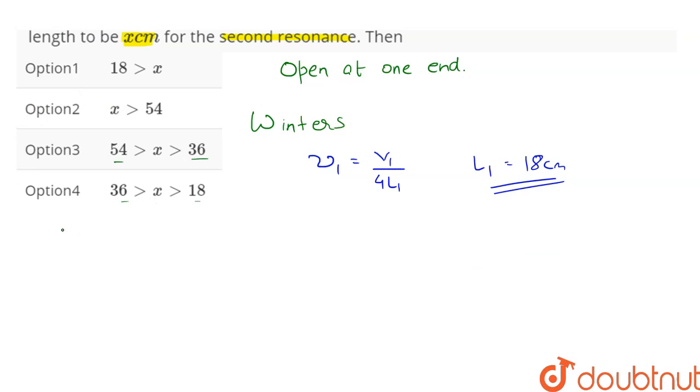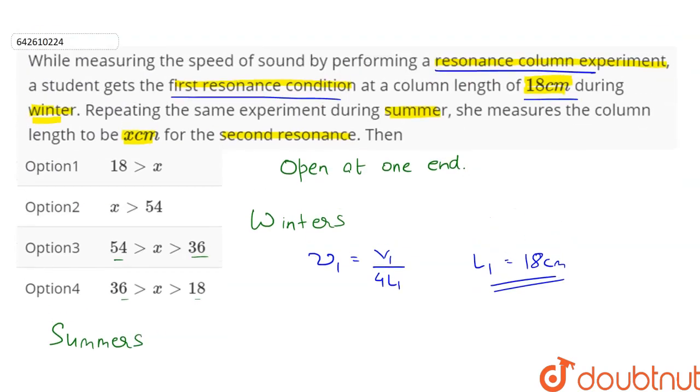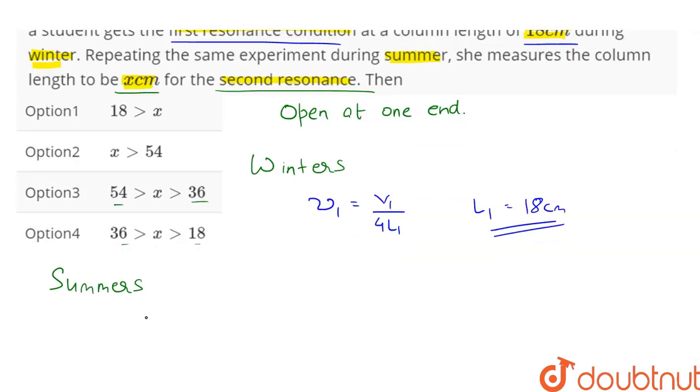Now in summers, it was said that she measures the length to be x cm for the second resonance. Now for a column which is open only at one end, only odd harmonics are possible. Therefore, the second resonance nu2 is equal to 3 into V2 upon 4L2.